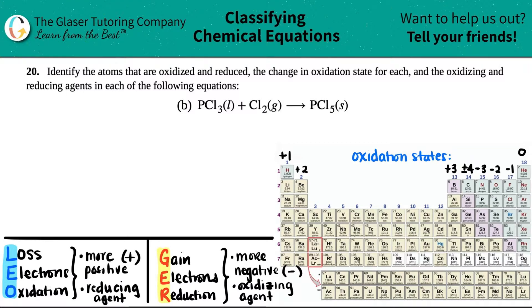Number 20, identify the atoms that are oxidized and reduced, the change in the oxidation state for each of them, and then the oxidizing and reducing agents in each of the following equations. And then we have letter B out of the bunch.